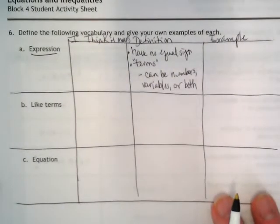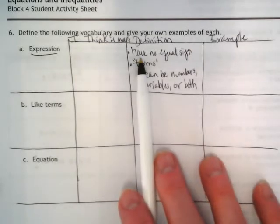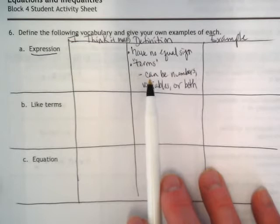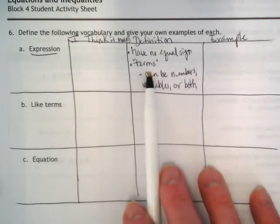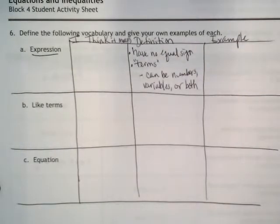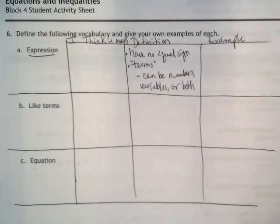So an expression, no expression has equal signs. They are always going to be just some terms together. They have terms in them which can be numbers, variables, or both. I'd like you to take a look at your entry task because there's four boxes there. Three of those four boxes are expressions.